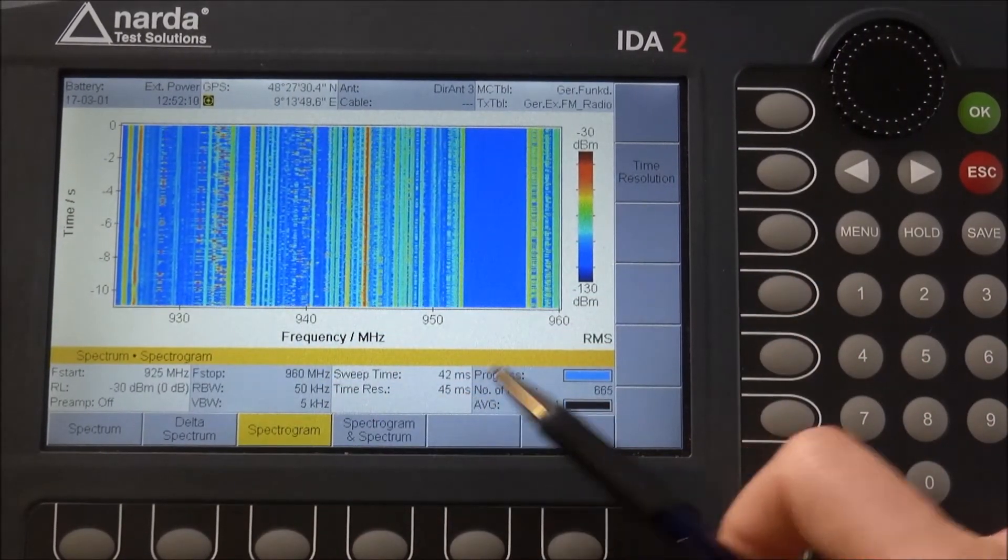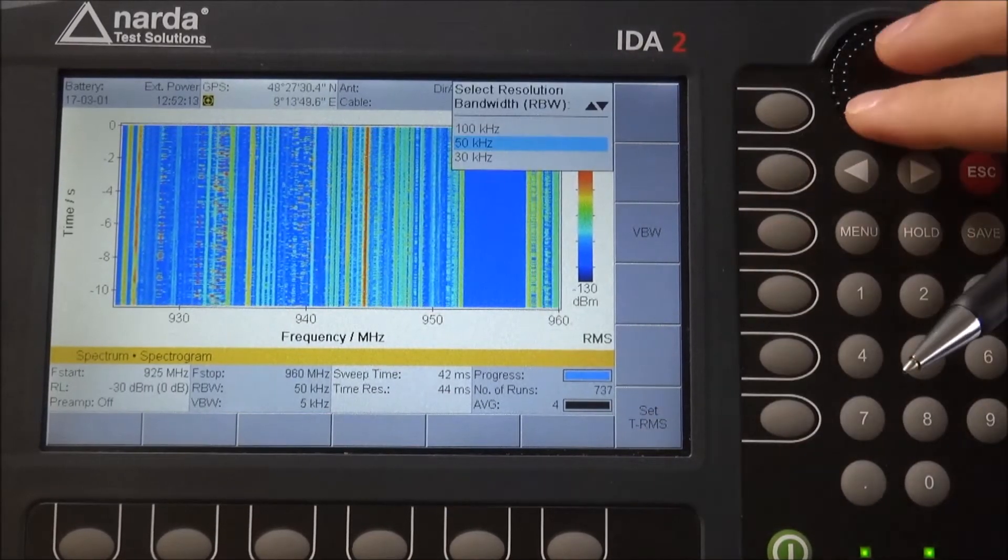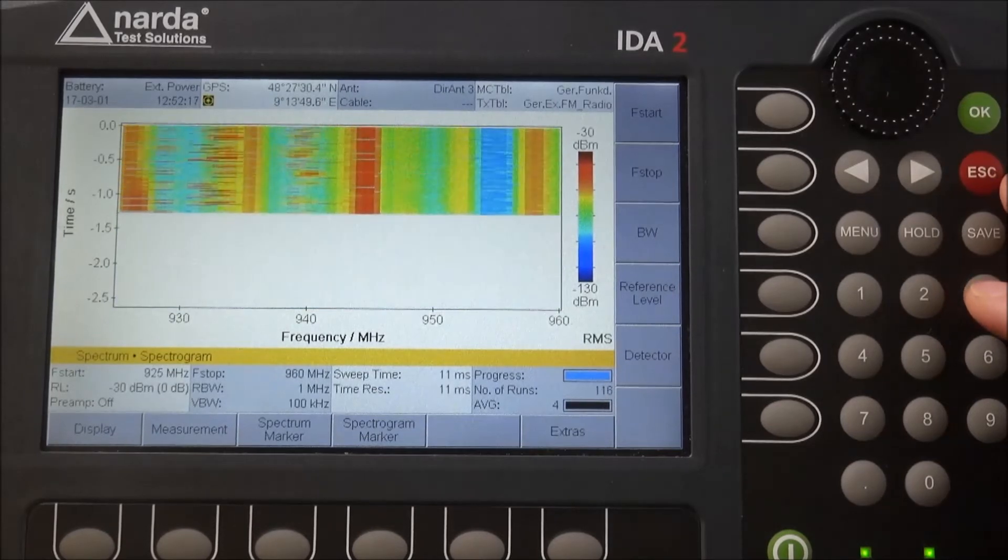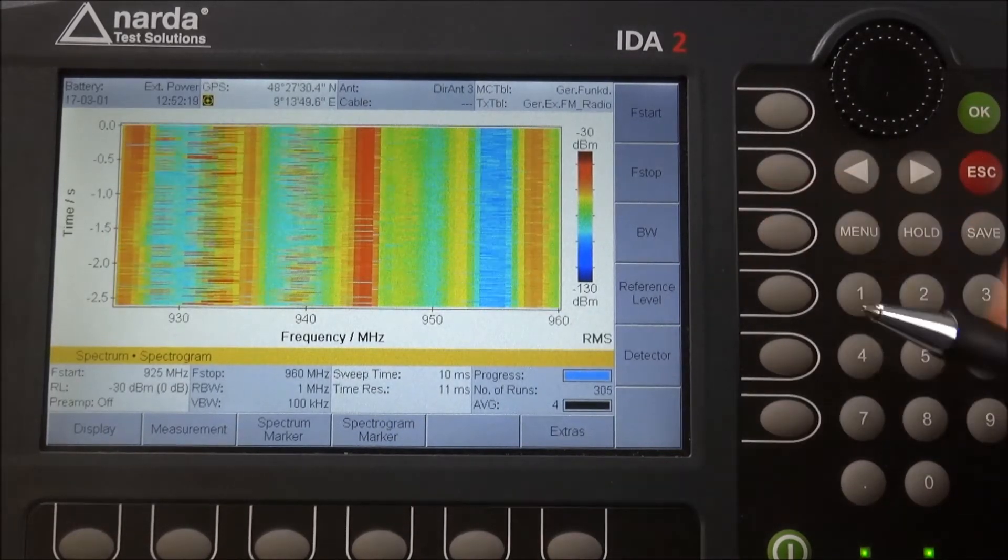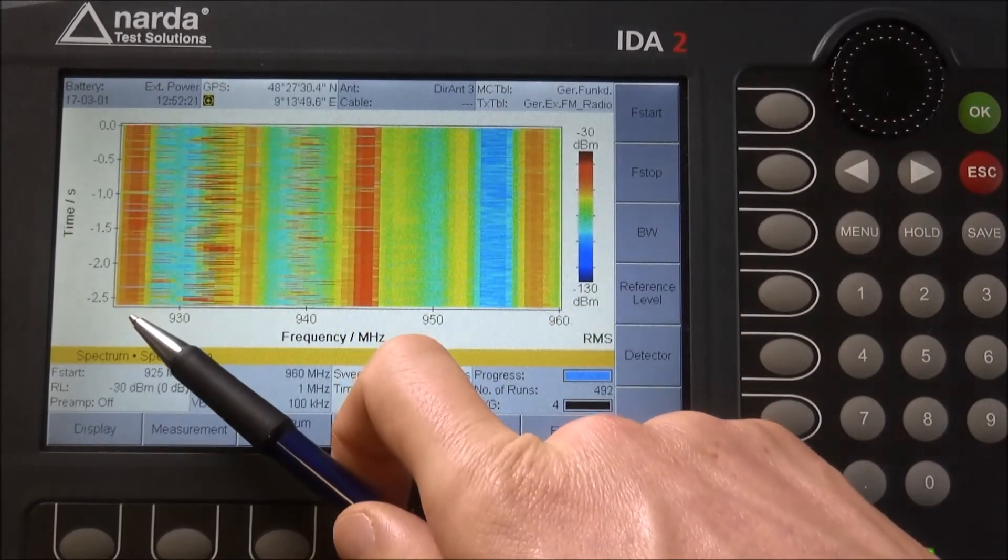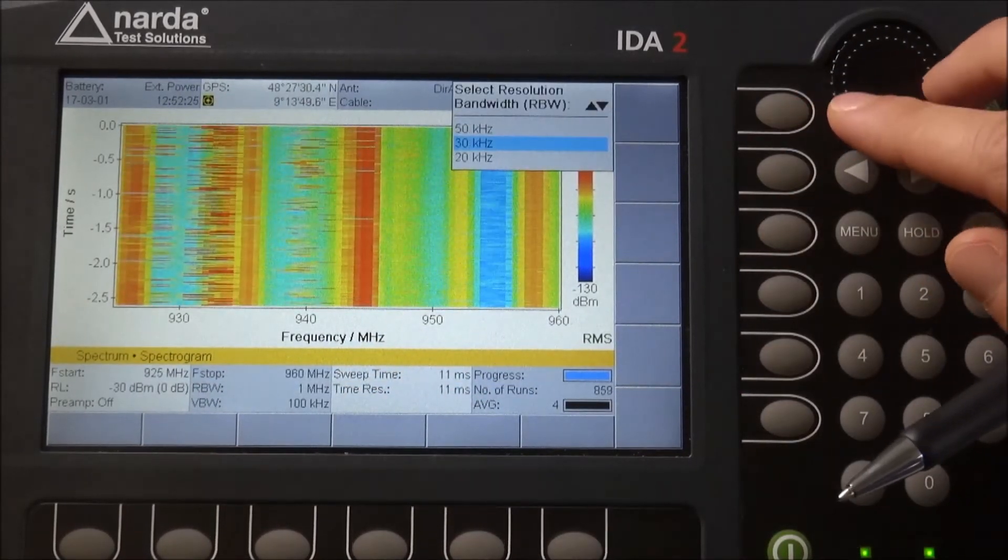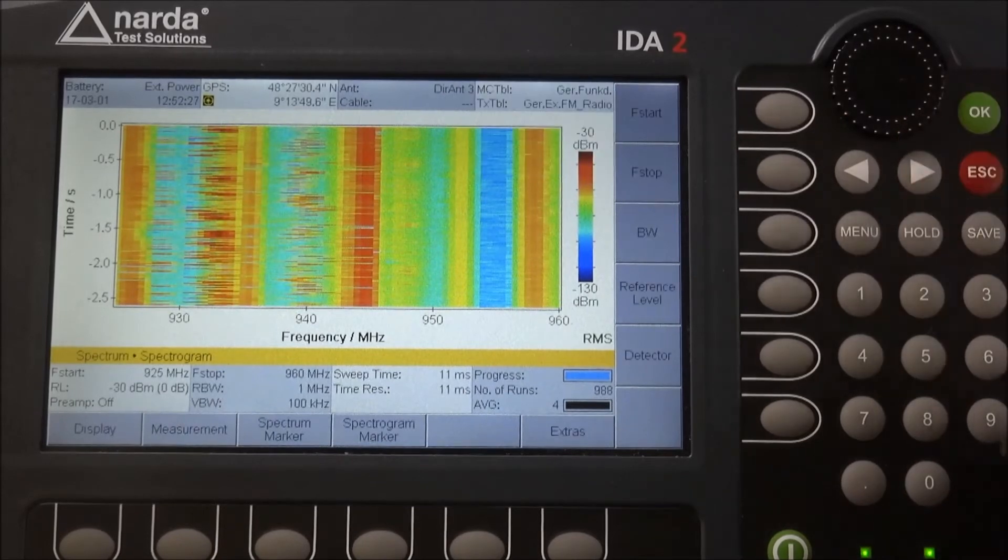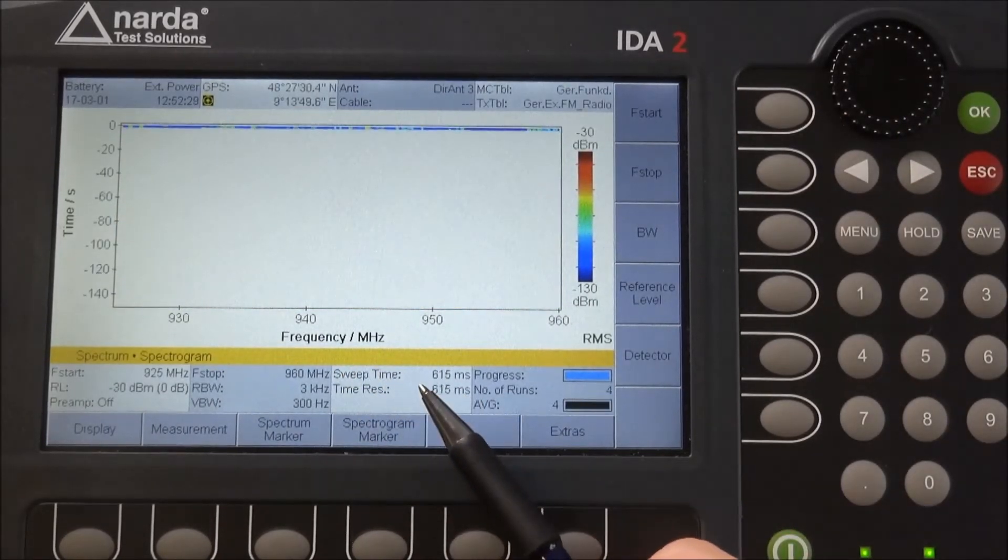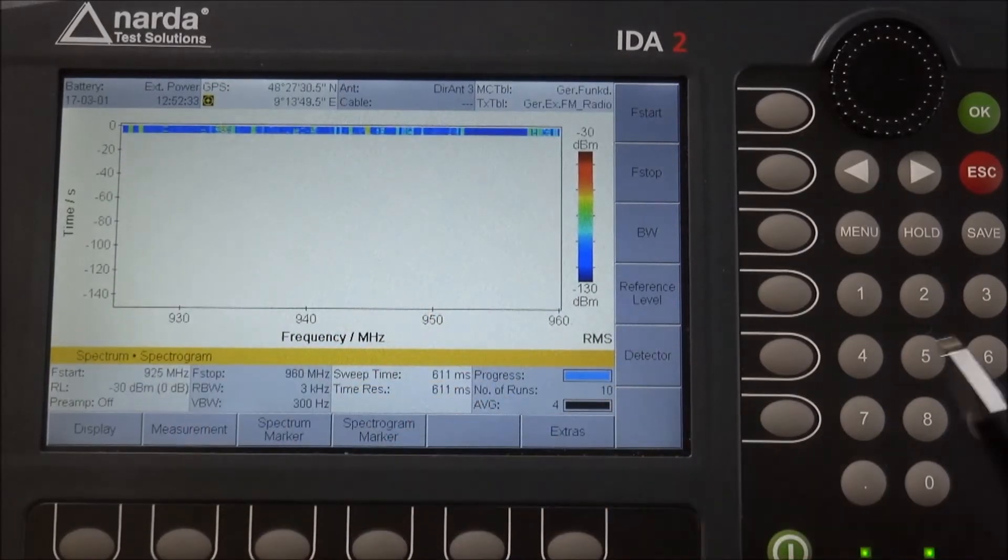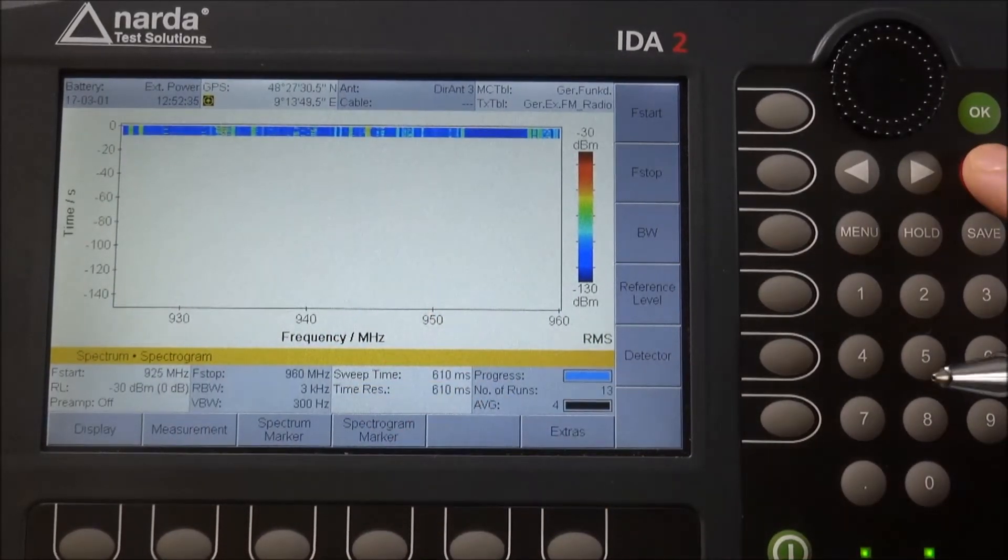By increasing the RBW to one megahertz, our displayed spectrogram becomes shorter. If we take a very narrow RBW and the sweep time increases, the scaling in our spectrogram also increases.